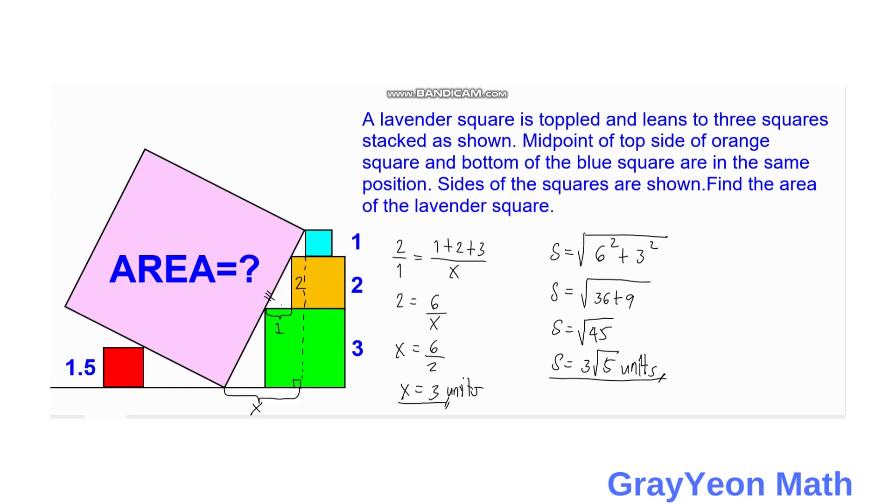Next is we find the area of this lavender square. The area of any square is equal to the side squared. So area is equal to 3 square root of 5 squared, so area is equal to 9 times 5, which equals 45 square units. And that is our answer.